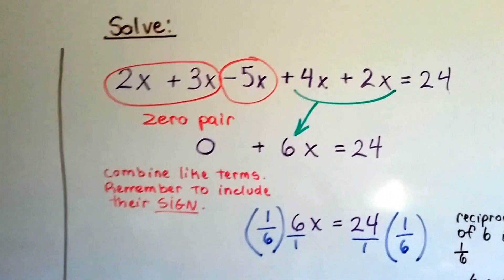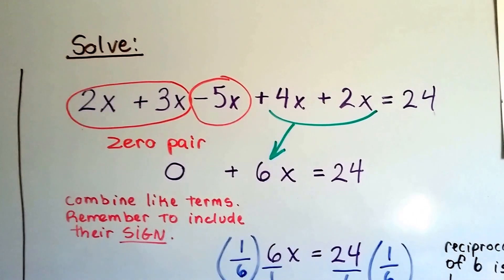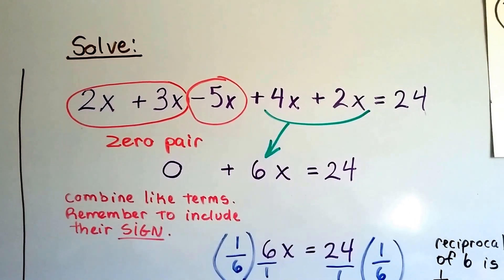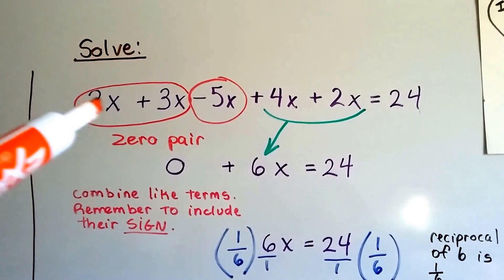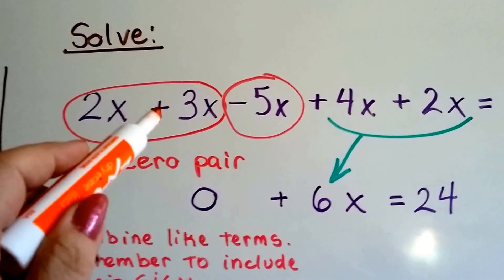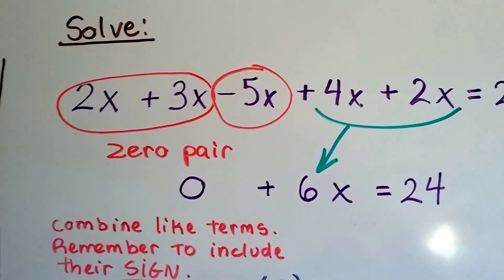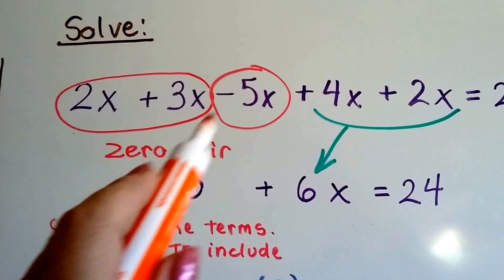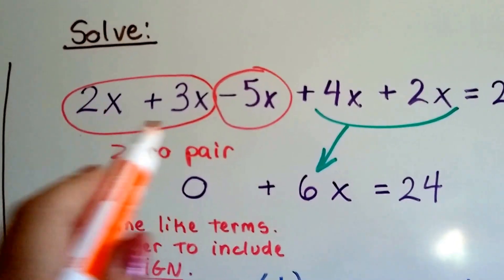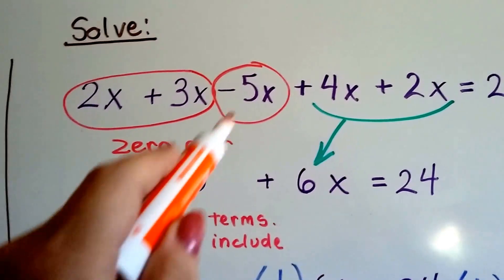And if we need to solve 2x plus 3x minus 5x plus 4x plus 2x equals 24, we can see right here that we've got a zero pair. This 2x plus 3x is 5x, isn't it? Now we have a minus 5x. Well, plus 5x minus 5x.